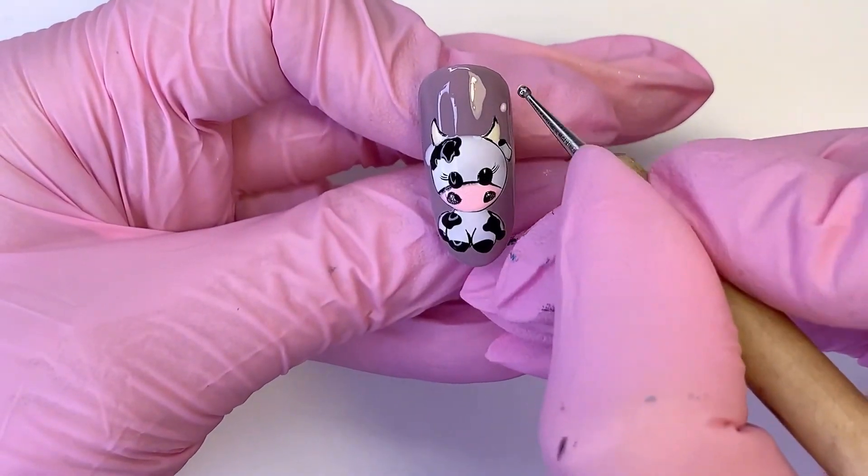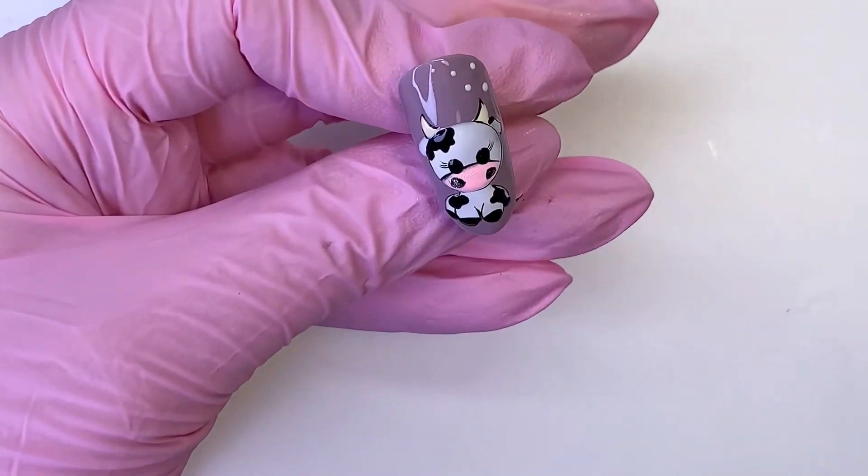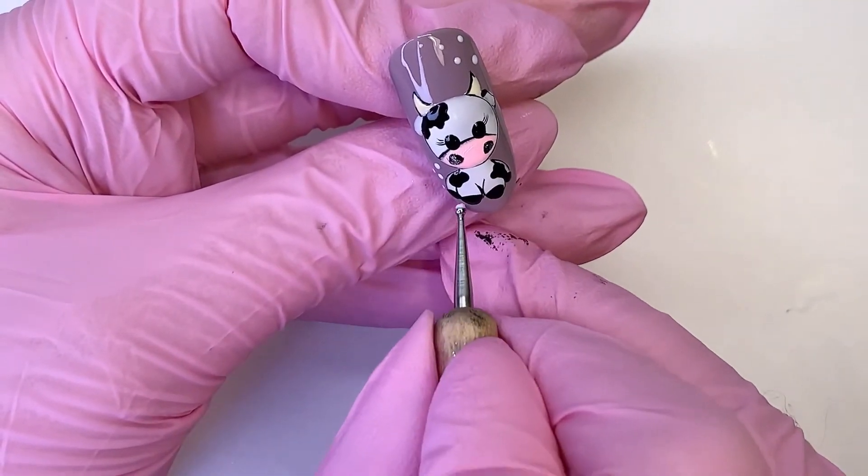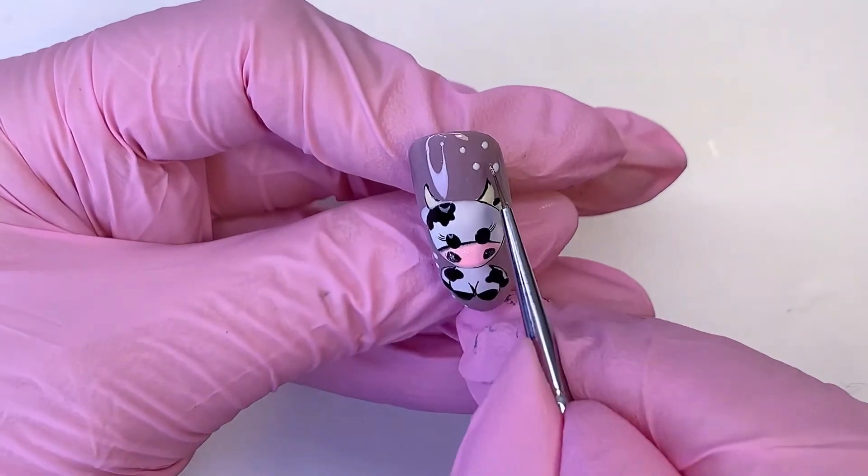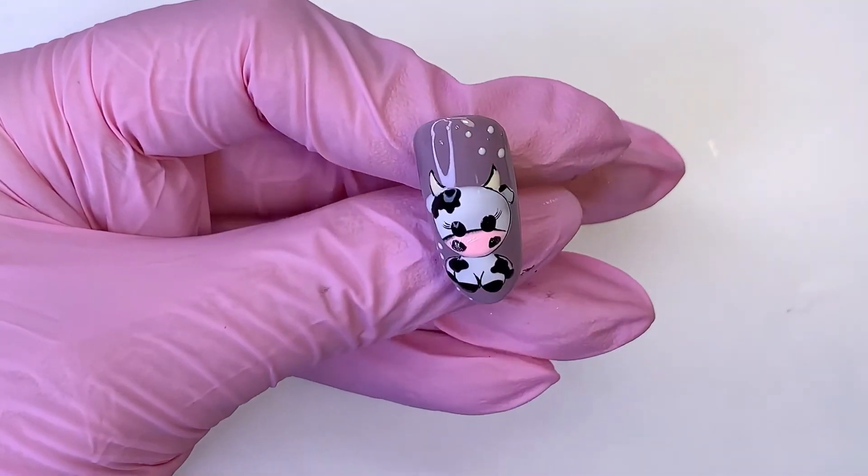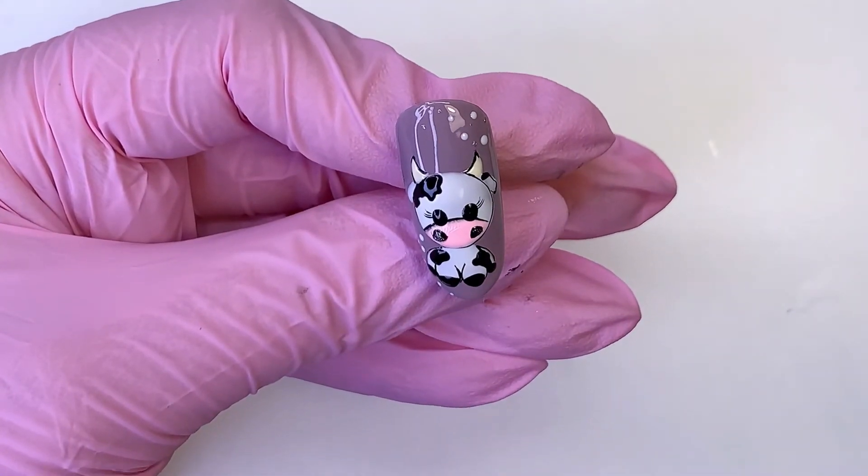And we can also add a little snow falling with white gel polish and silver gel polish or gel paint.